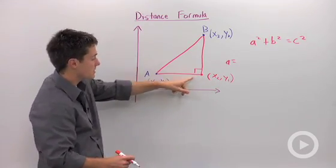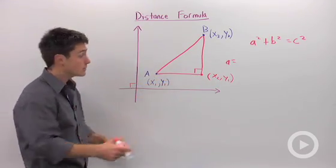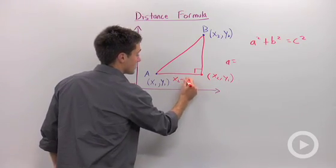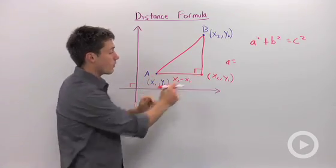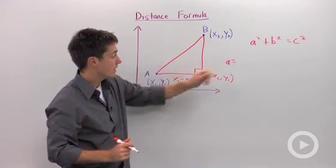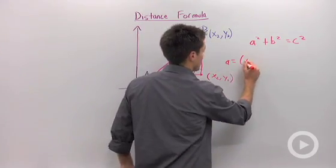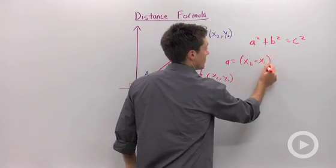So if I want to find the distance between these two, all I need to do is subtract my X's. So this distance is X2 minus X1. That difference will tell me how far away those points are. So I'm going to say that A is X2 minus X1.